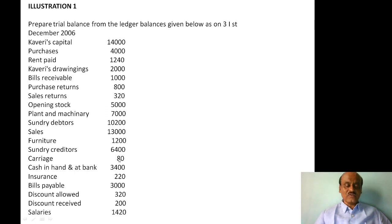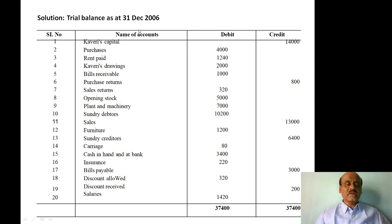Furniture: debit side. Sundry creditors — liability, credit balance — credit side. Carriage — expense — debit side. Cash in hand and bank — asset, debit balance — debit side. Insurance — expense — debit side. Bills payable — liability, credit balance — credit side. Discount allowed: debit side. Discount received: credit side.